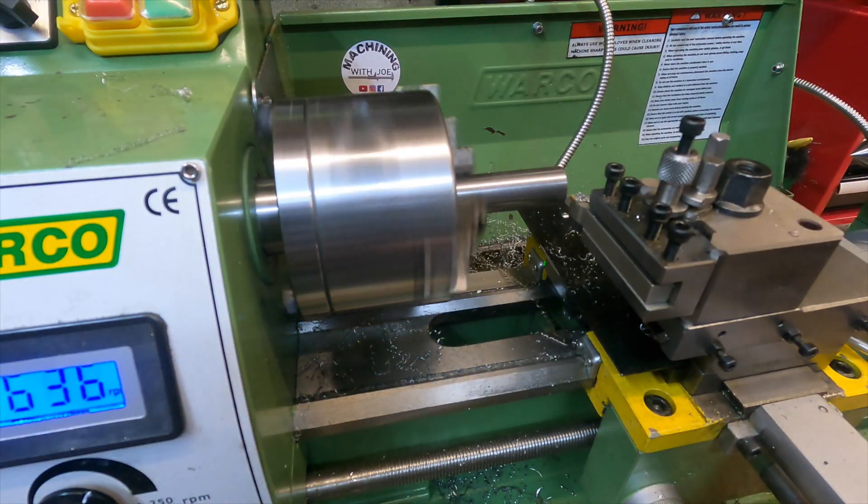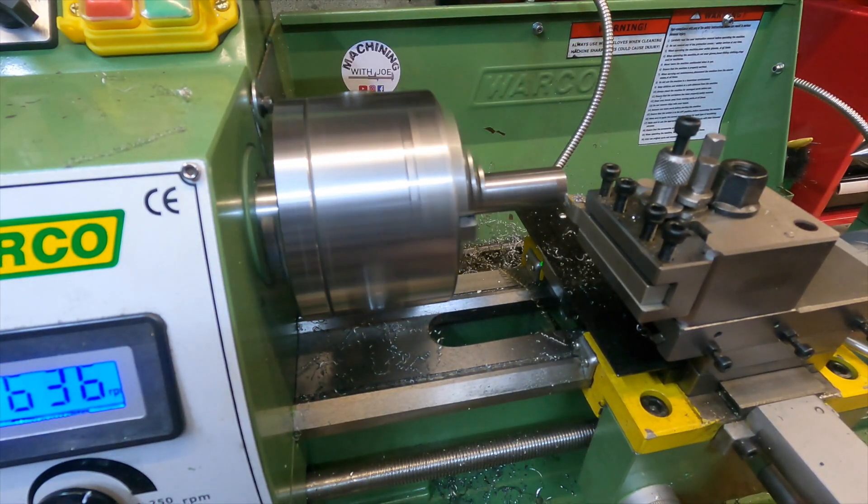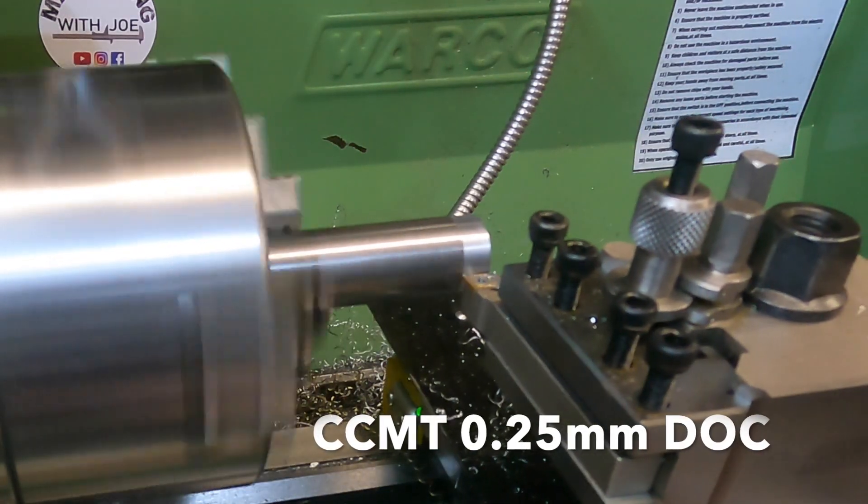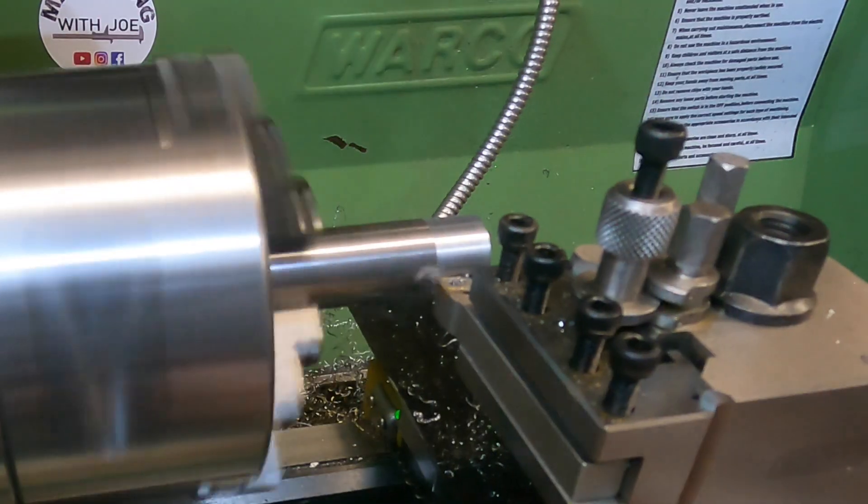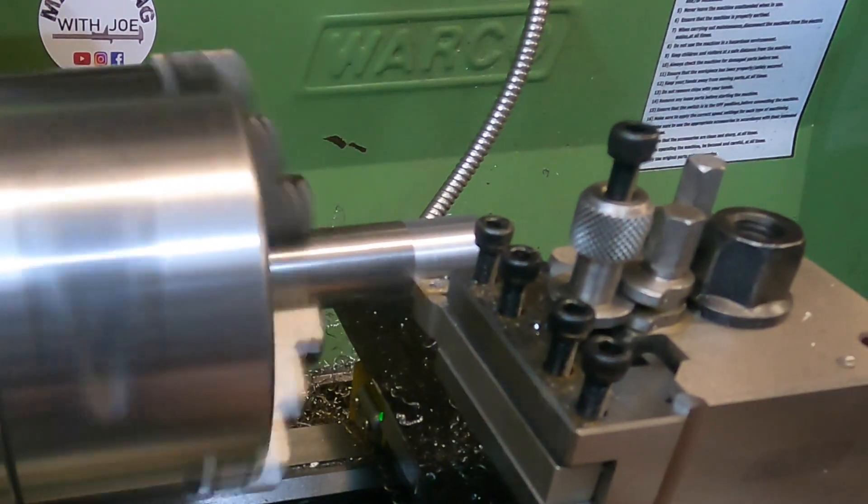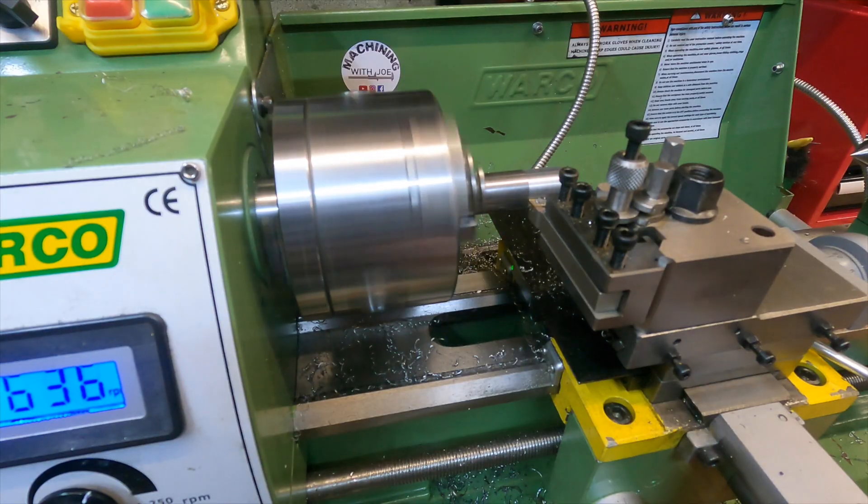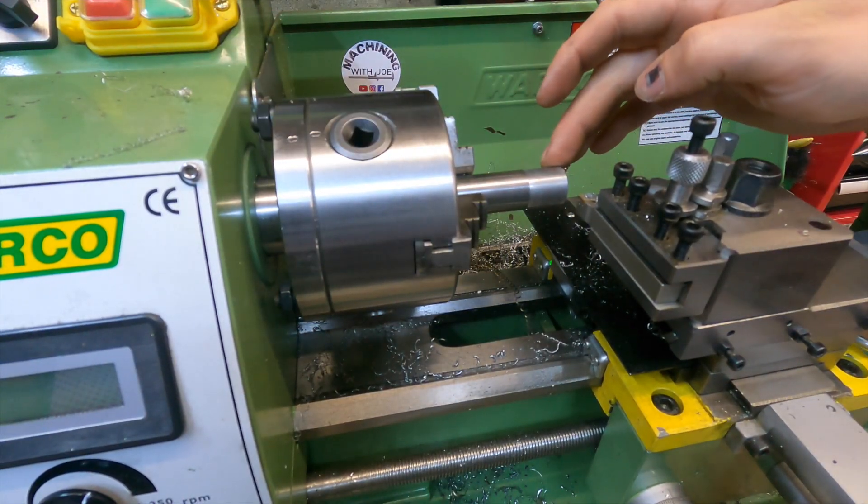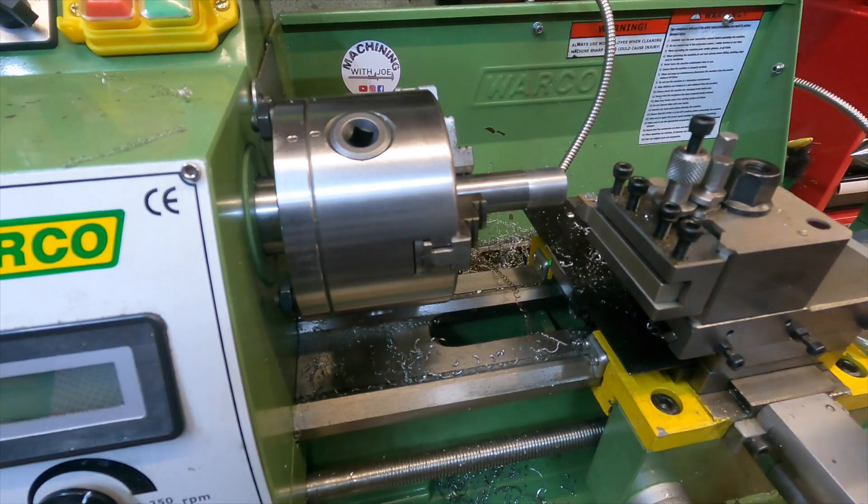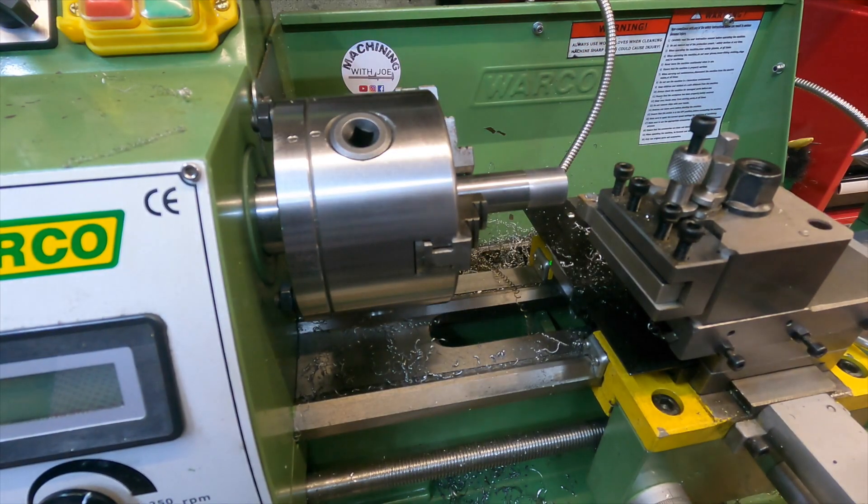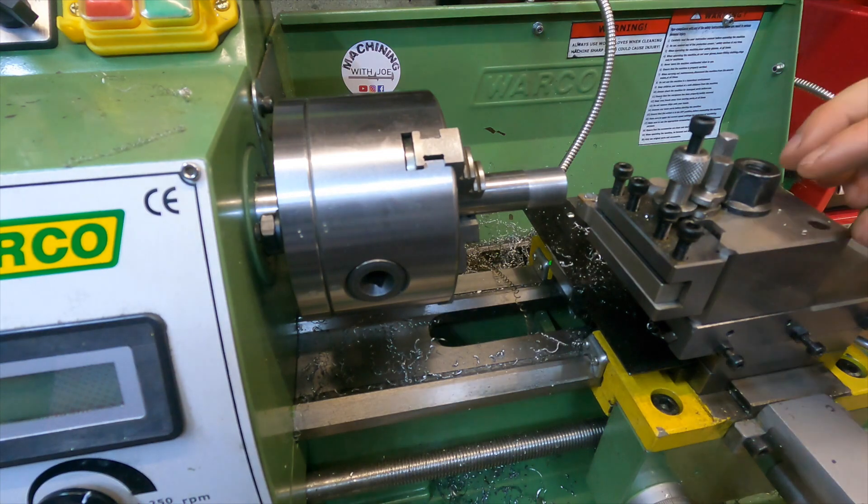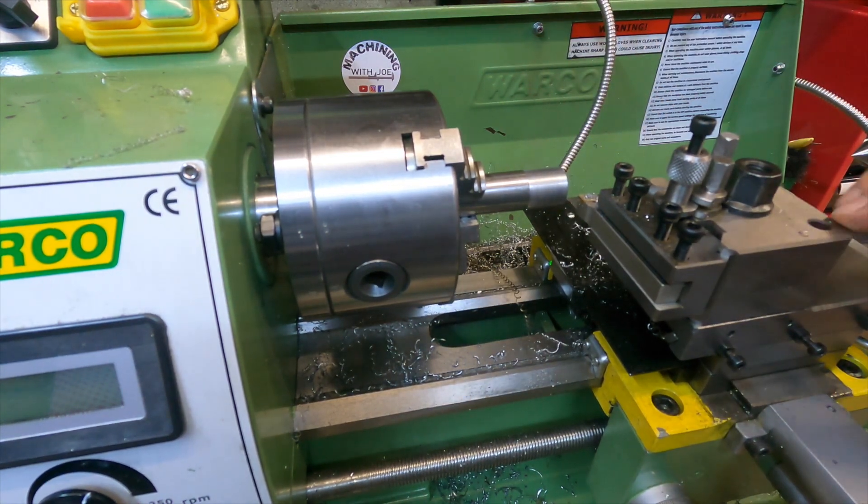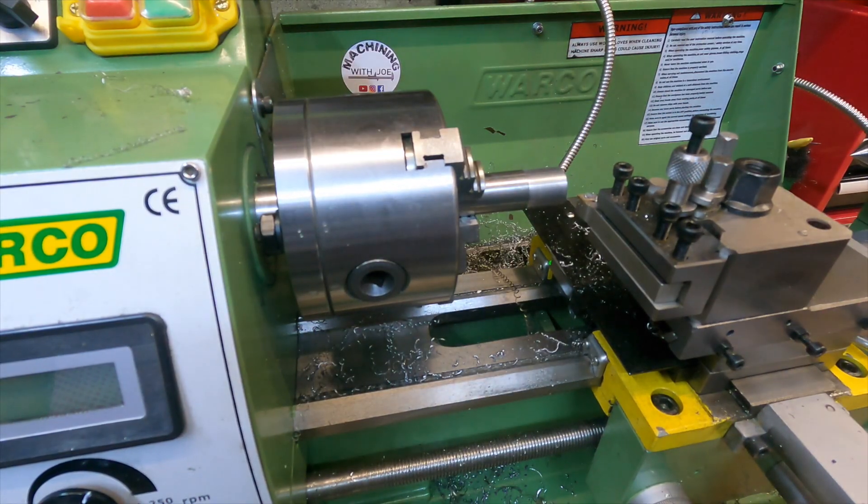So that's a 0.25 millimeter depth of cut for about 20 mil, same as I've done previous. I've got to say the finish is fairly similar. I would say the CCMT has given a slightly rougher finish over the CCGT.